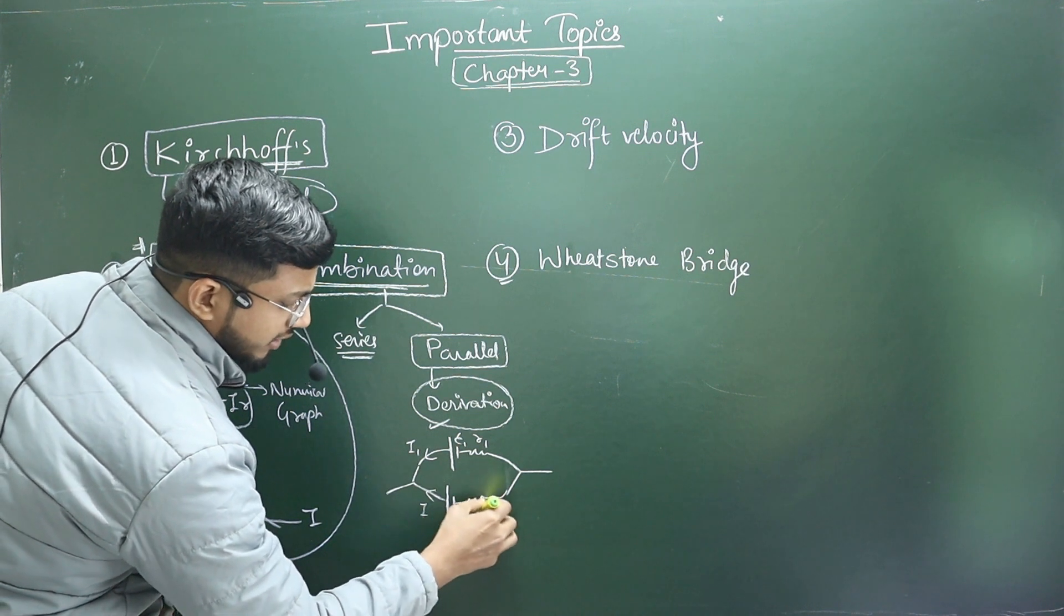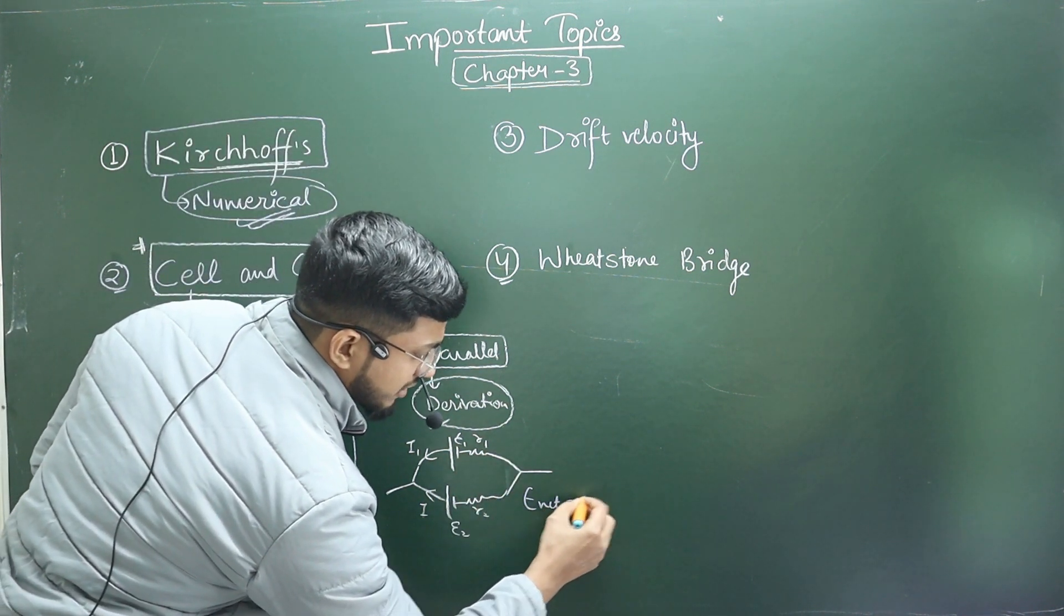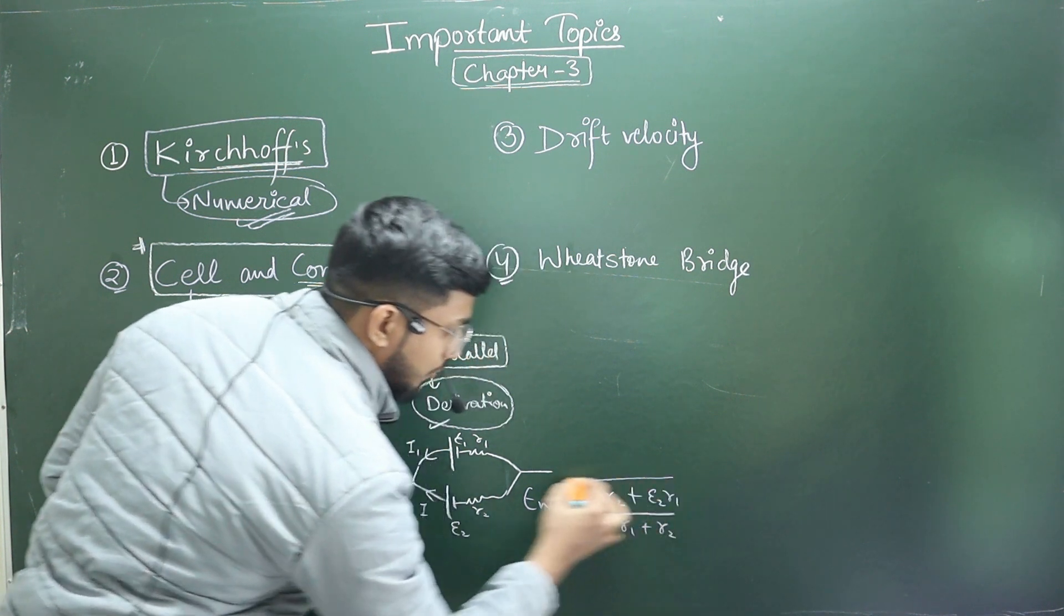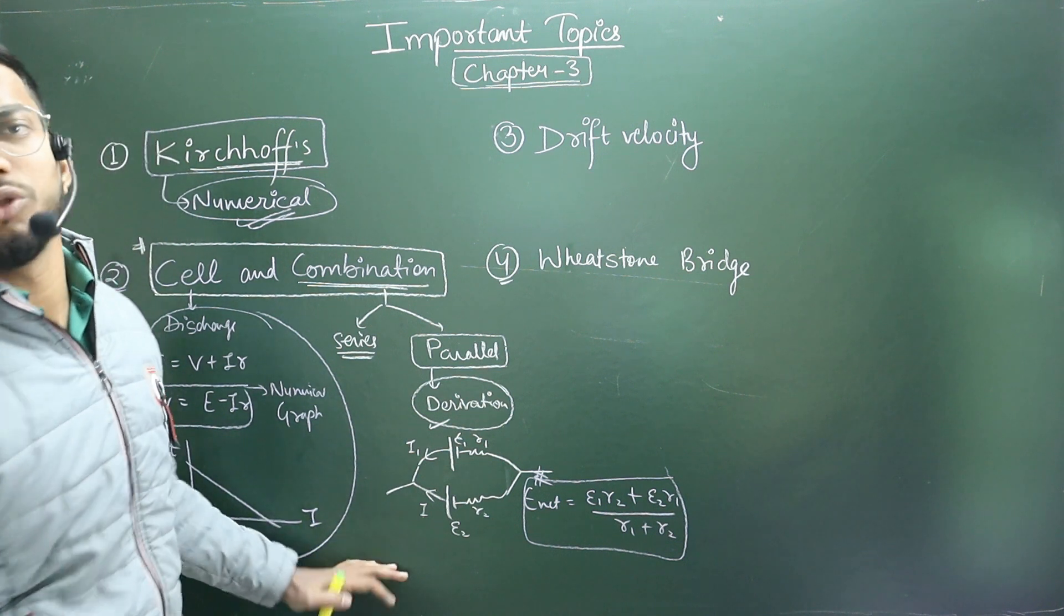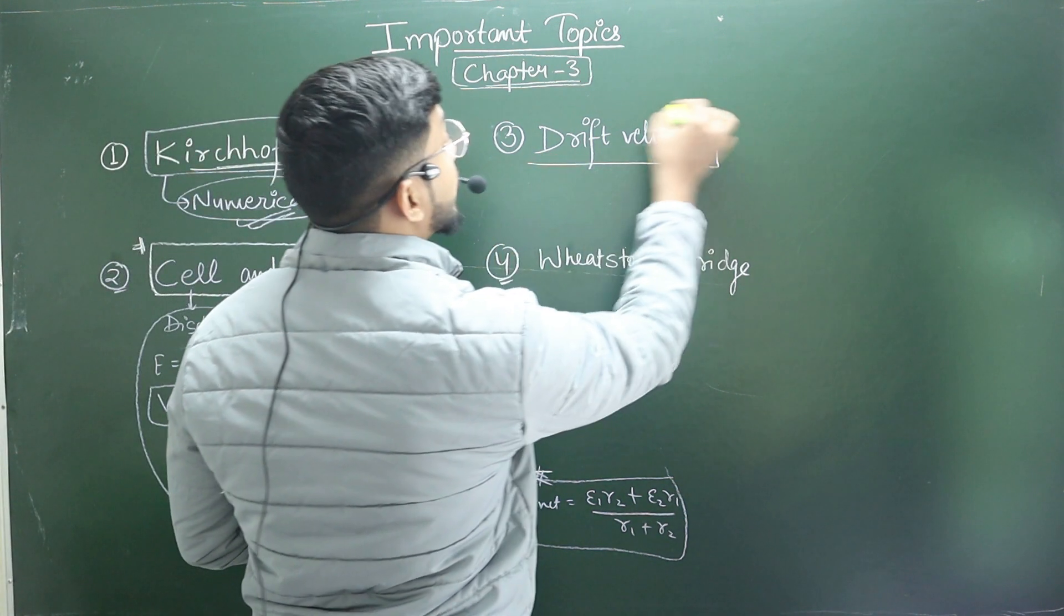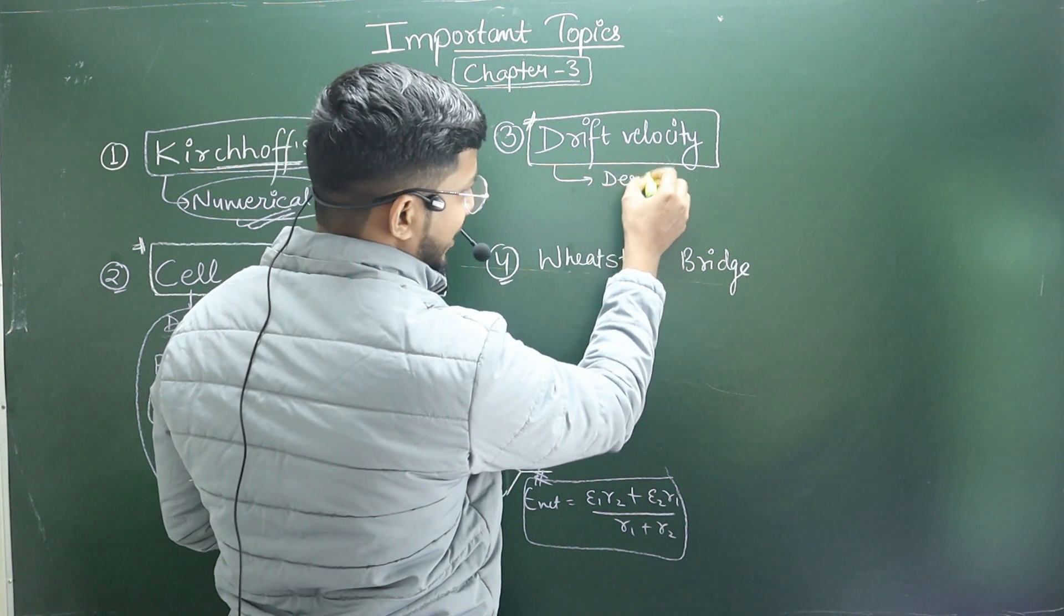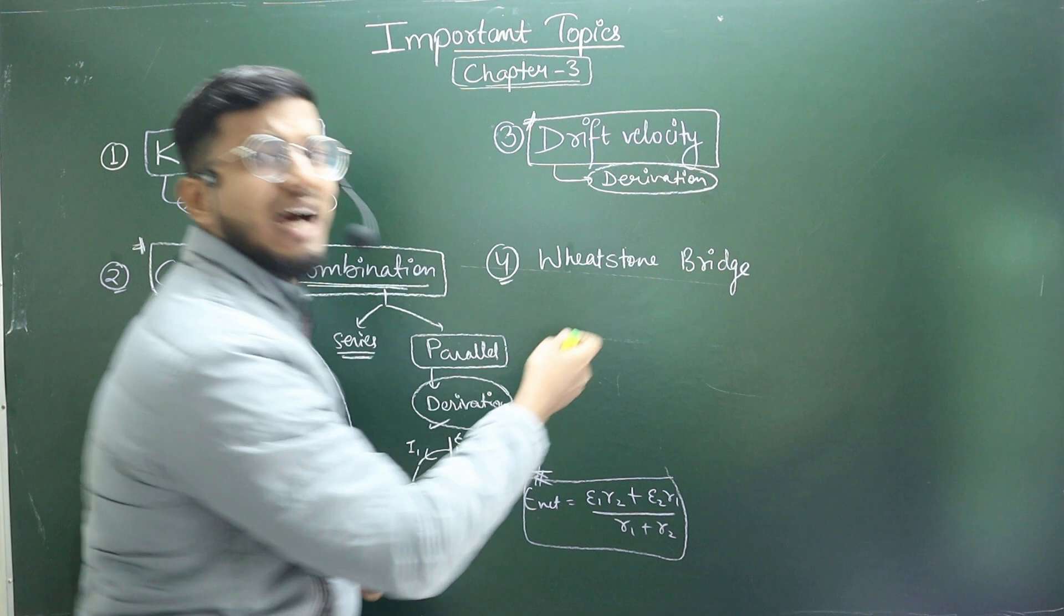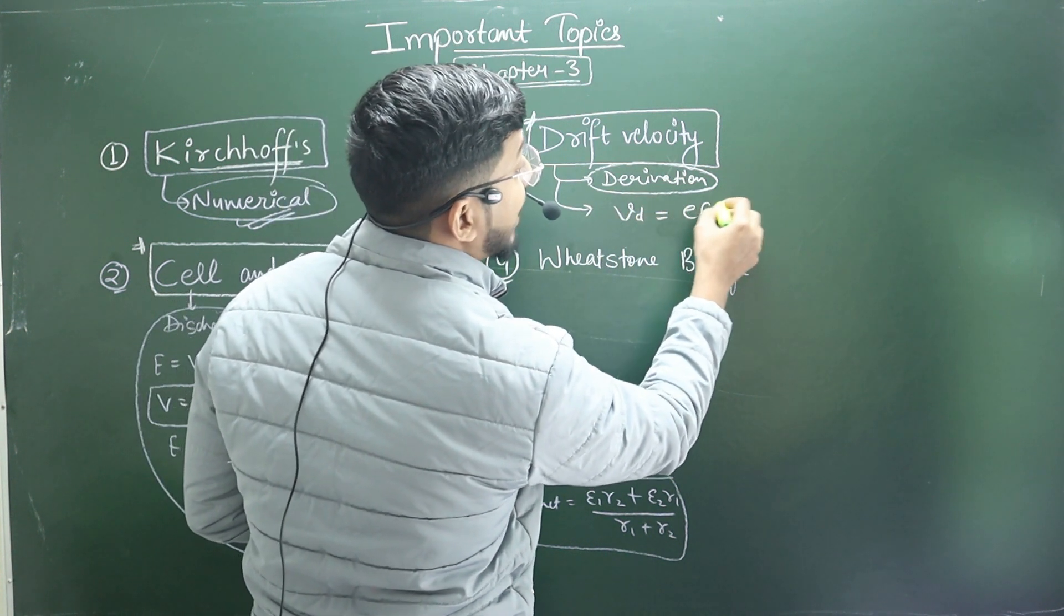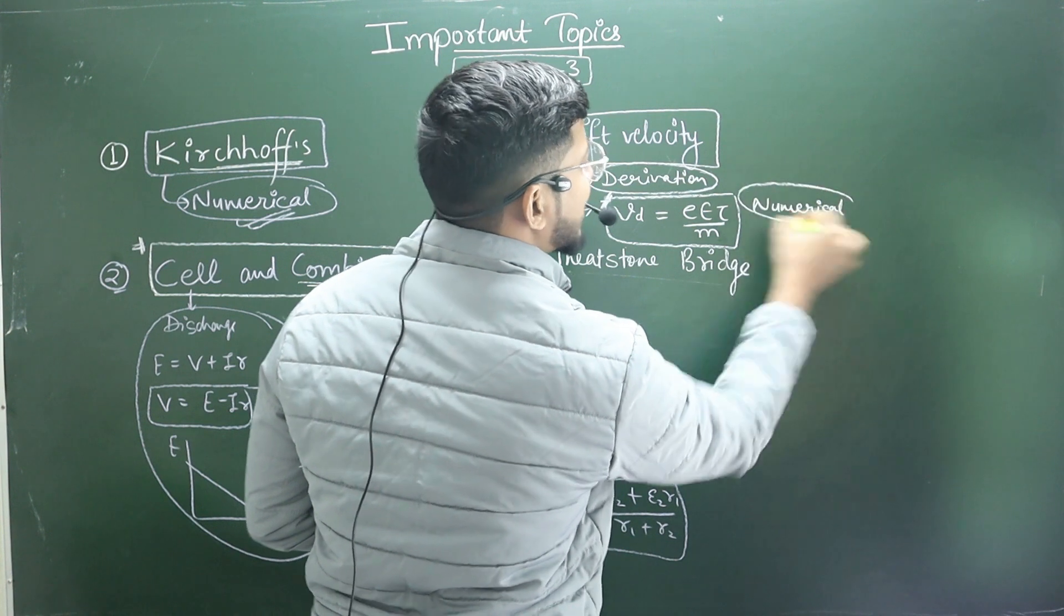Then e1 r1 and e2, e2 r2, resistance. Right now combine EMF, e1 r2, e2 r1 divided by r1 plus r2.